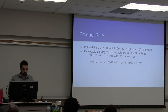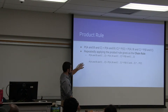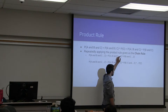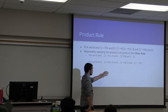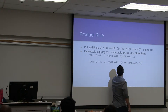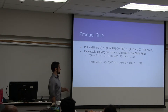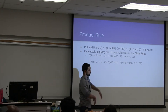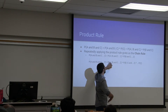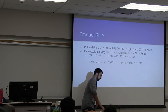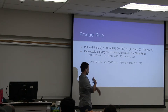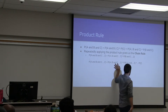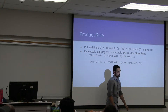Next, we have the product rule. The product rule states that the probability of A and B and C can be changed to the probability of A and B given C times the probability of C. That is also equivalent to the probability of A given B and C times the probability of B and C. If we iteratively apply this rule, we actually get the chain rule. The probability of A and B and C all the way down to Z equals the probability of A given B, C through Z, times the probability of B given C through Z, and so on, all the way down until we have one variable left, which is just the probability of Z.